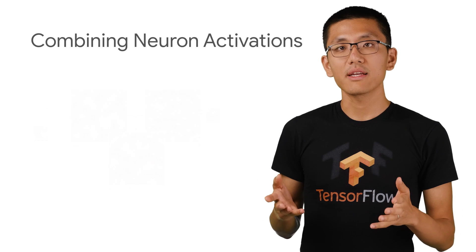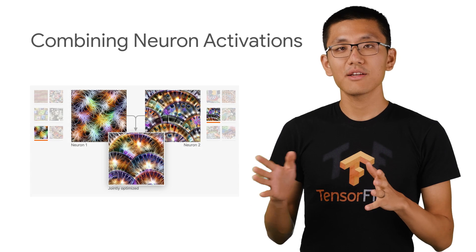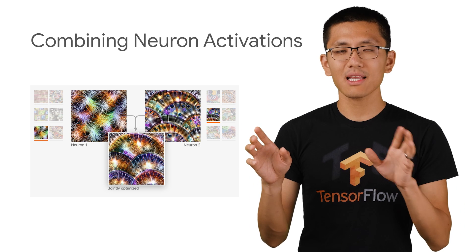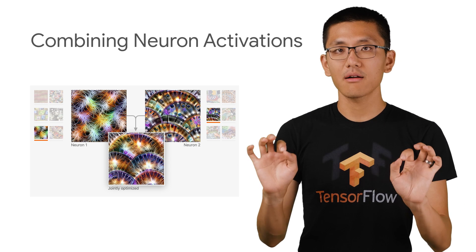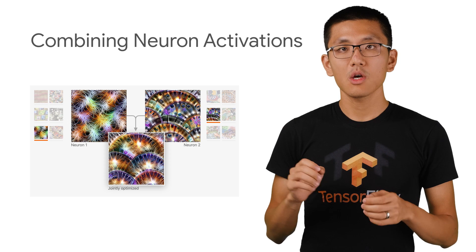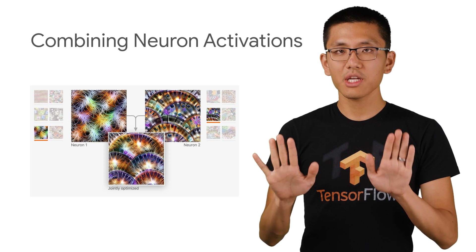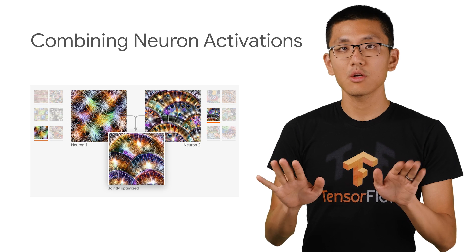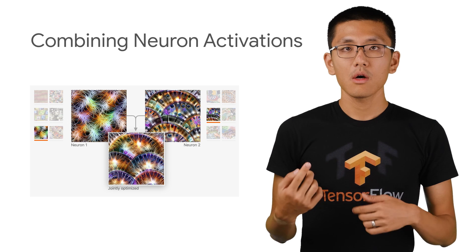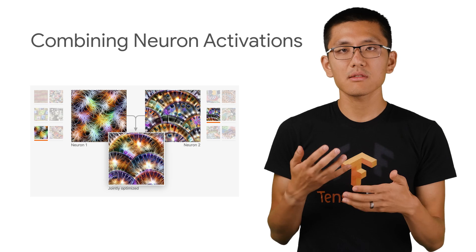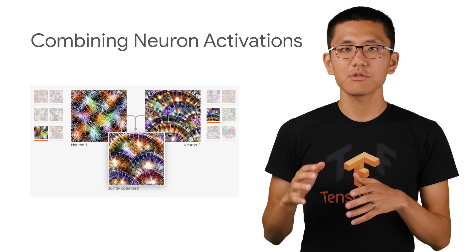Now let's take a look at some ways to combine different neurons together, allowing us to see how neurons activate in pairs. This is showing the optimized input images when optimizing for two different channels of neurons simultaneously rather than just one. What ends up happening is that the images sort of show up as a blend of the two channels that they originated from.